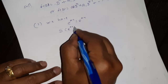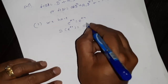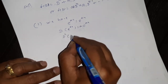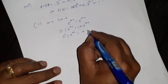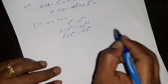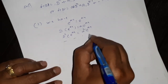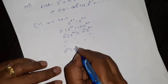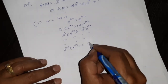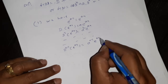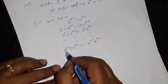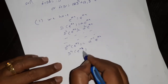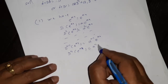Then the derivative of e raised to ax: D of e raised to ax is e raised to ax into a. D squared of e raised to ax — a is constant and the derivative of e raised to ax is e raised to ax into a, so a into a becomes a squared. In this way, the (n-1)th order derivative of e raised to ax is a raised to n minus 1 times e raised to ax, because the second order is D a squared. So the nth order derivative D raised to n of e raised to ax is a raised to n times e raised to ax.